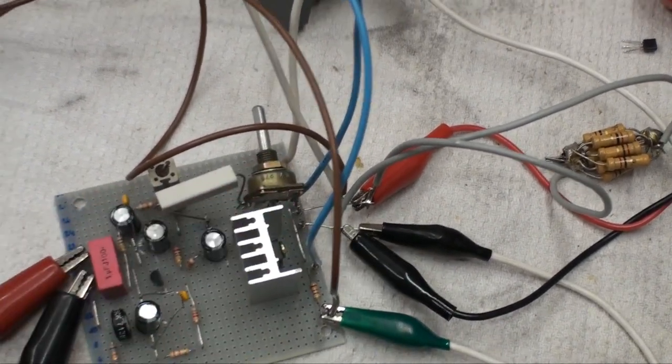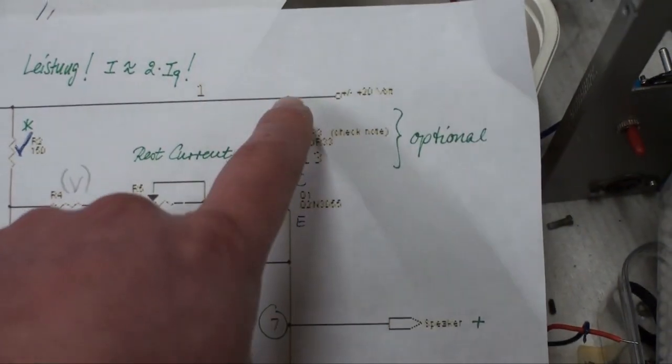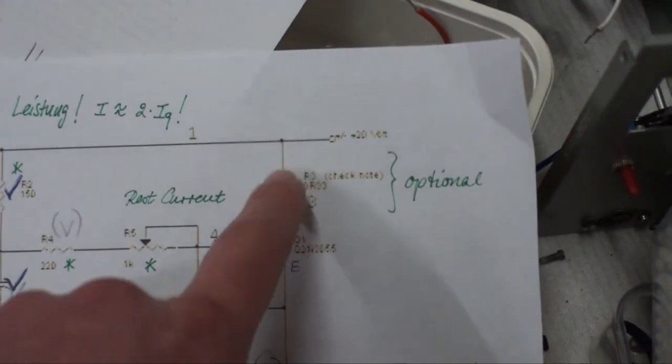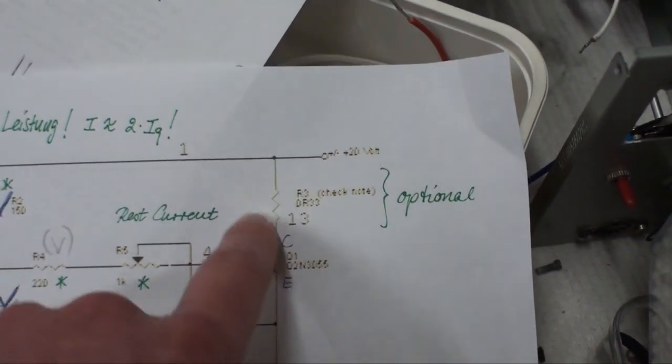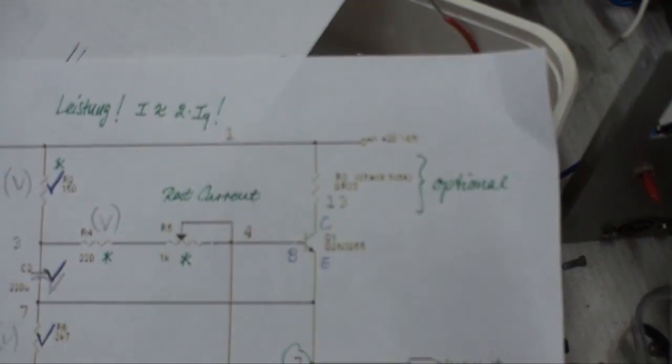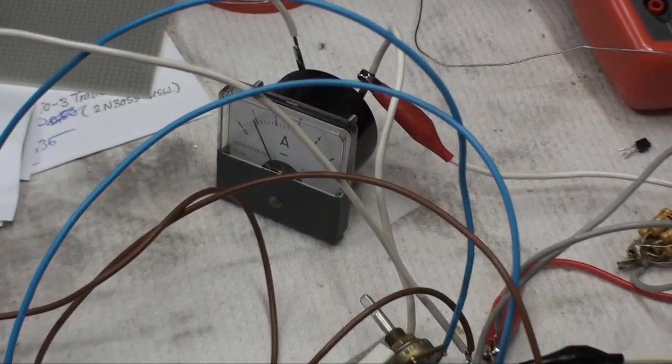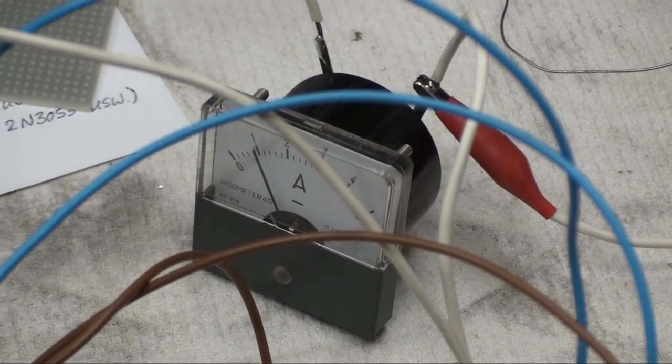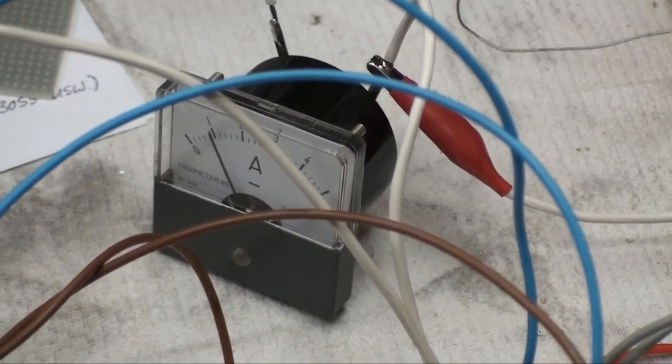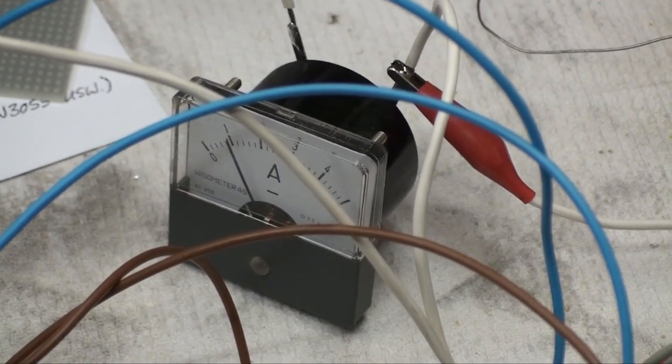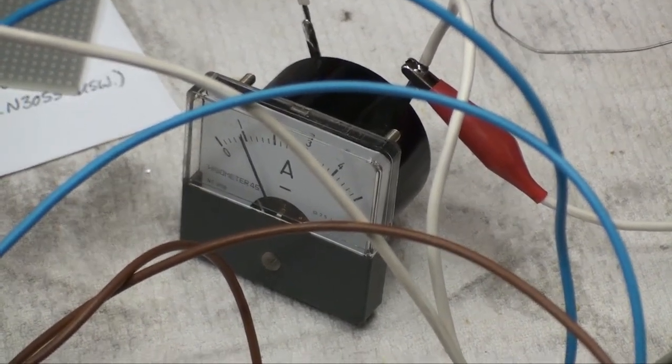This one right here sets the collector current through the output transistors, and that's this resistor right here. They put that into the circuit to monitor the collector current. Well, what I've done is I just directly wired in a little amp meter. I got it set for one amp,